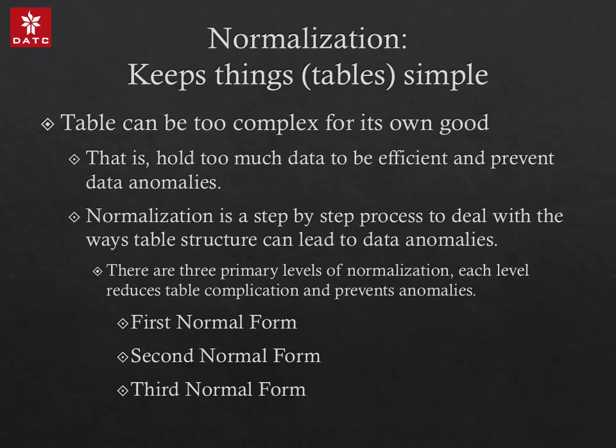In practice, database normalization is a step-by-step process. The database community has developed a series of guidelines for ensuring that databases are normalized. These are referred to as normal forms and are numbered from one to five. The first normal form is the lowest form of normalization; at each level the guidelines become stricter. In practice you're going to see the first, second, and third normal form. The fourth and fifth are much less commonly utilized. You will need to know about the first, second, and third normal form, so let's get hands-on.